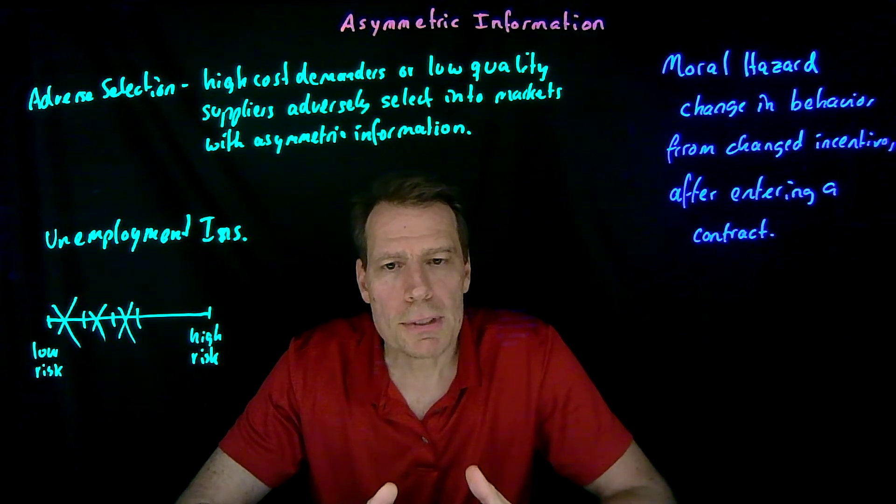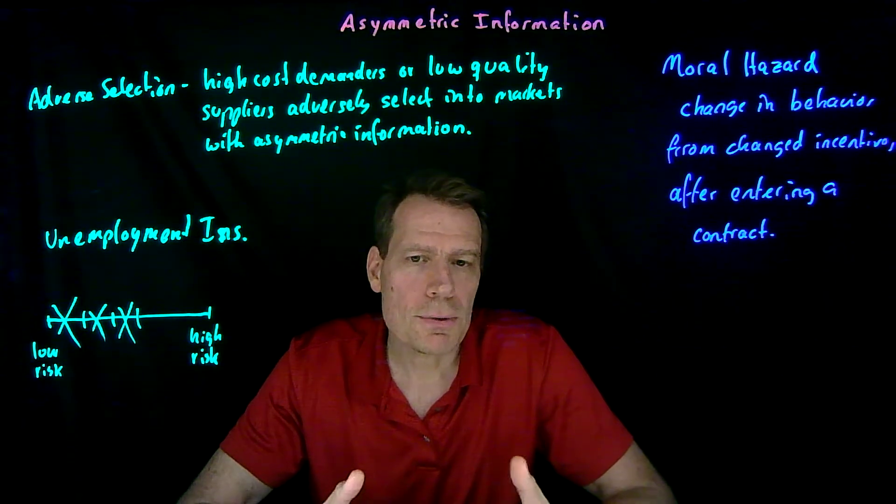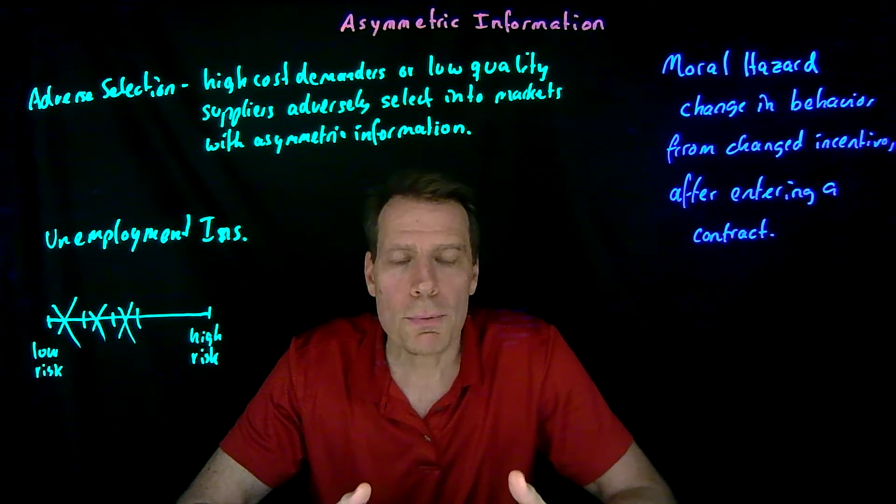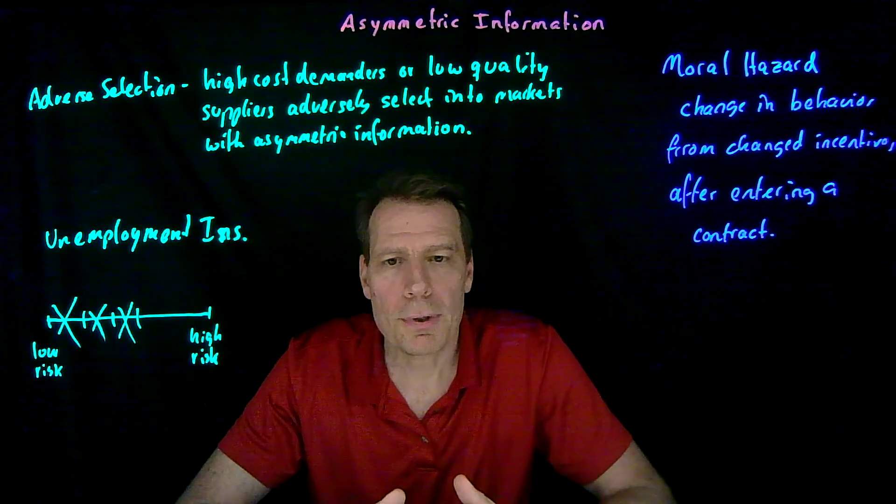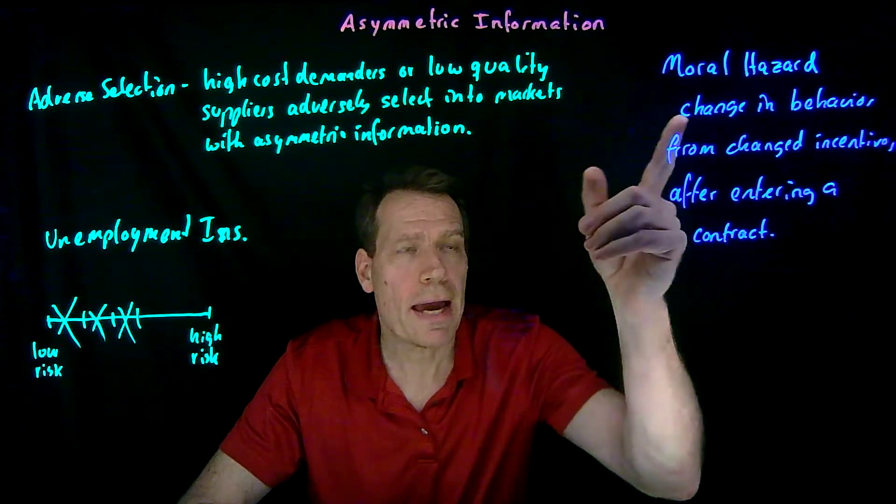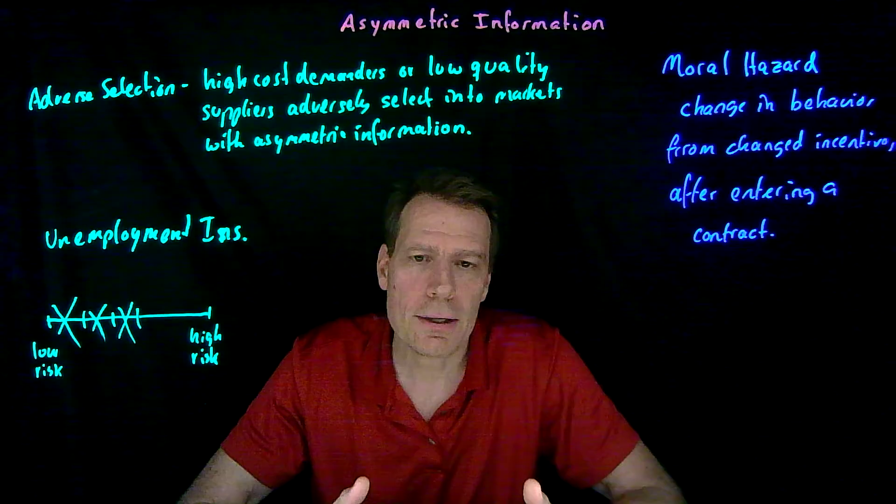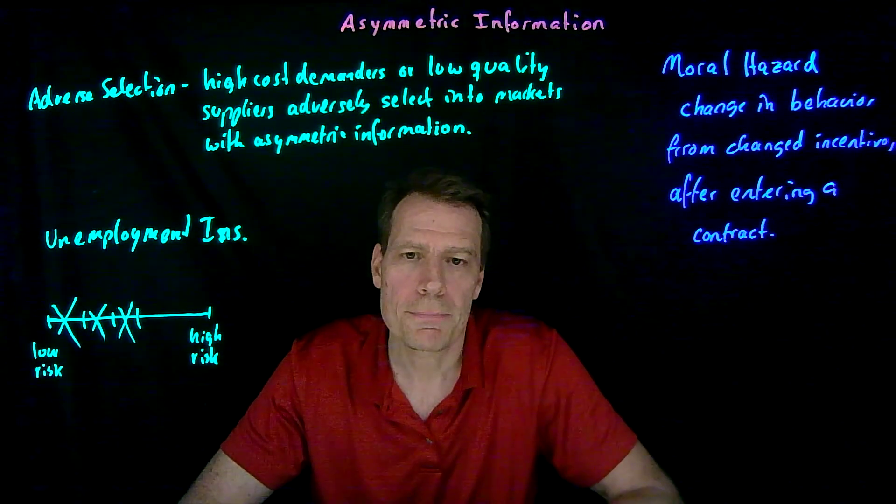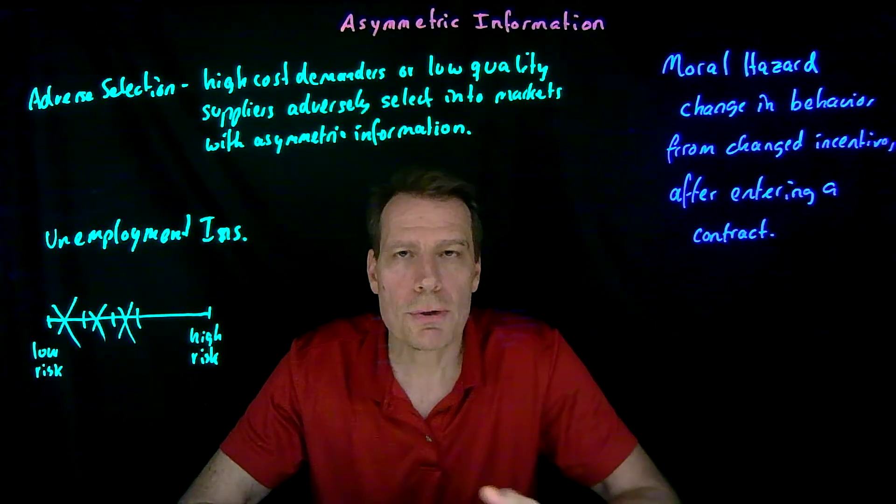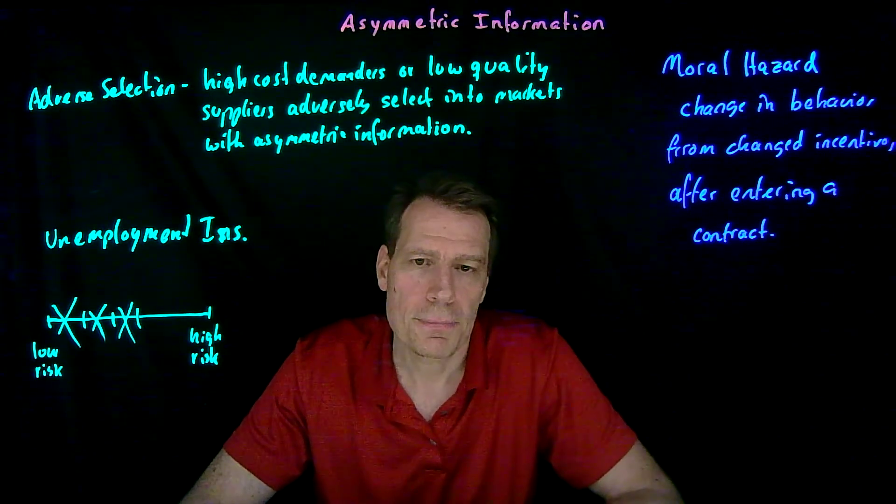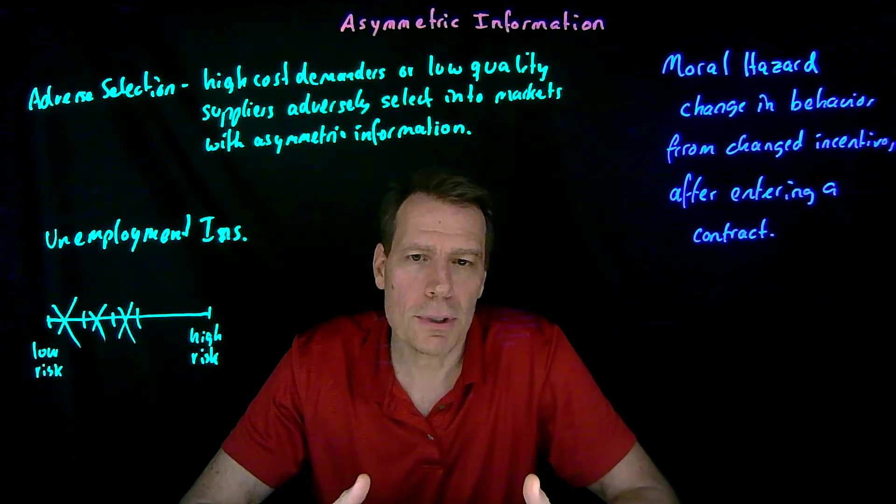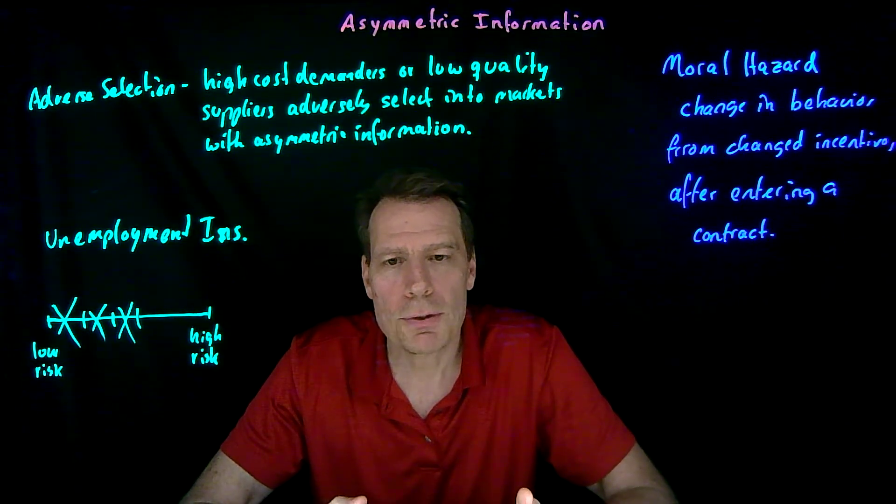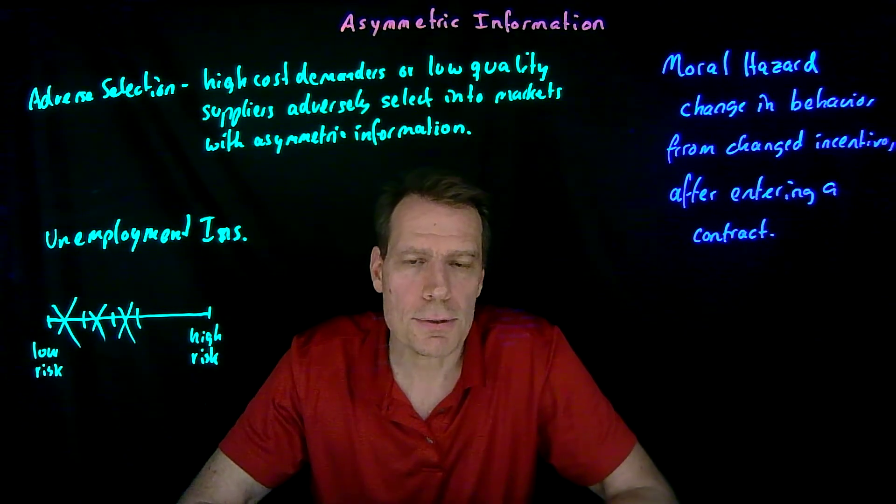Now, the unemployment insurance company can't tell whether you're the kind of employee who's always going to do a good job, or whether you're the kind of employee that's going to succumb to moral hazard, that's going to start slacking off on your current job when you know you're protected by unemployment insurance. So there's a new source of asymmetric information. You might know what kind of employee you are, that as soon as you have unemployment insurance, you're going to take it easy on the job.